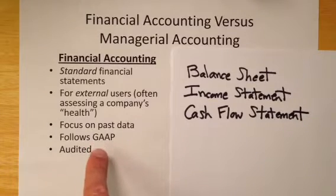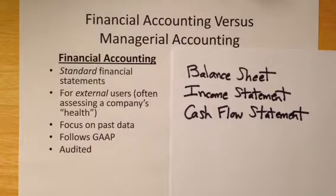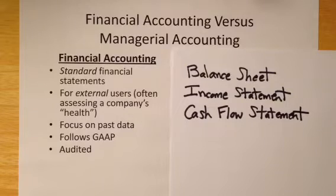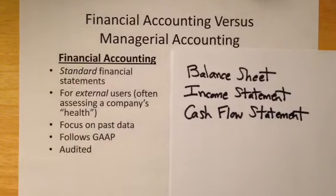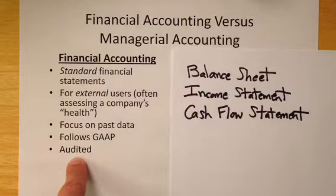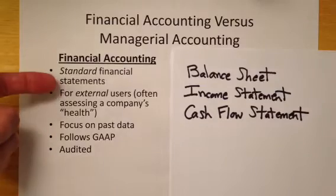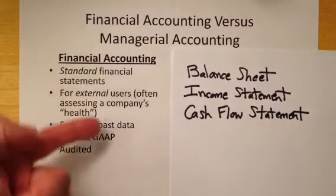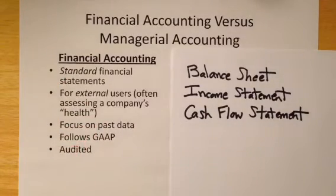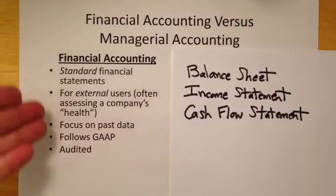These statements follow rules. In the United States, the rules are called US GAAP — Generally Accepted Accounting Principles. Other countries use different rules; you may recall from your financial accounting coursework that there's IFRS, International Financial Reporting Standards. There's a set of rules that need to be followed so that we can properly produce standard financial statements for external users. These statements are also audited — independent external auditors look at the financial statements and the processes within a company to verify that rules have been followed and everything has been reported accurately.